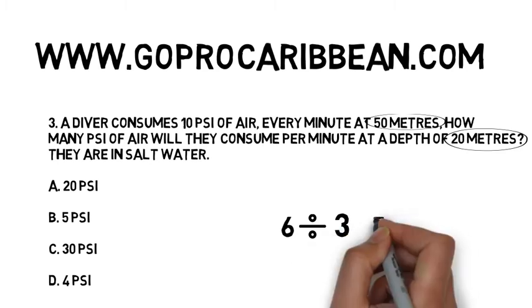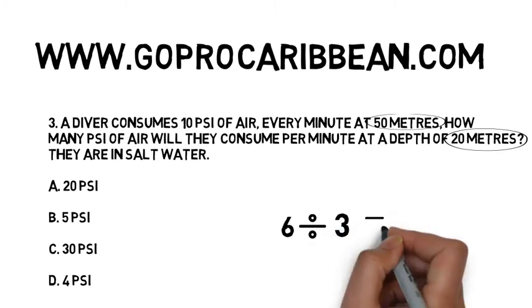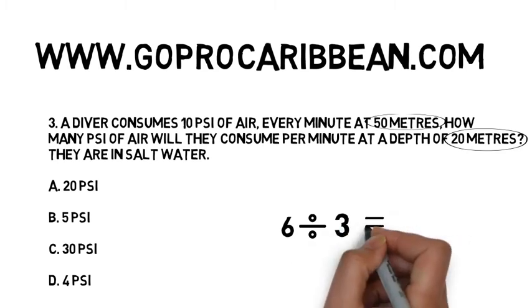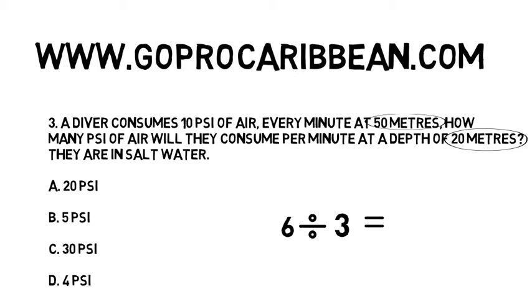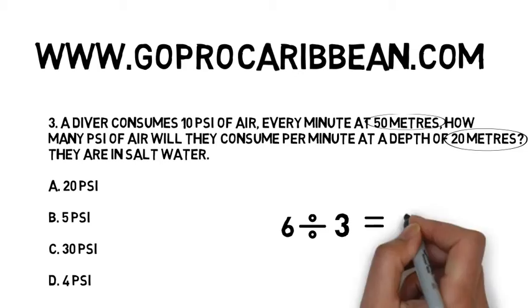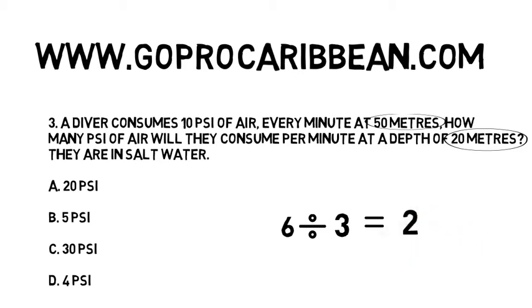Very simple — with the first depth second depth method, you always divide the starting depth by the ending depth. So we've got six divided by three equals two.